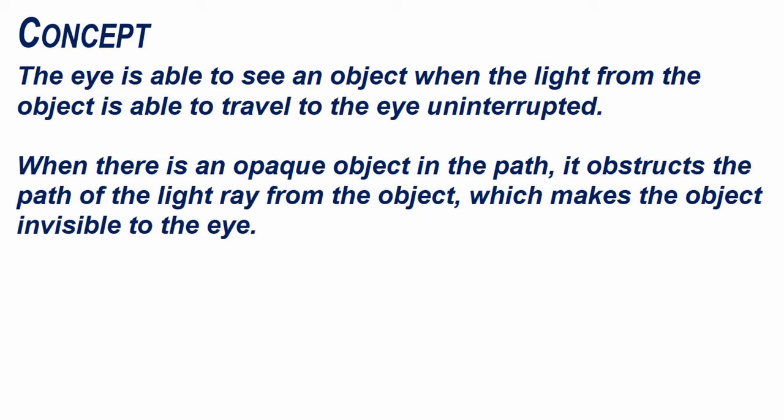The eye is able to see an object when the light from the object is able to travel to the eye uninterrupted. When there is an opaque object in the path, it obstructs the path of the light ray from the object which makes the object invisible to the eye.